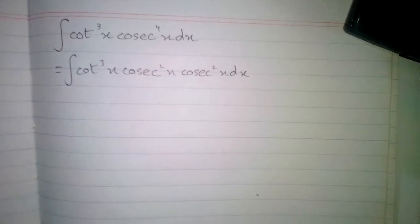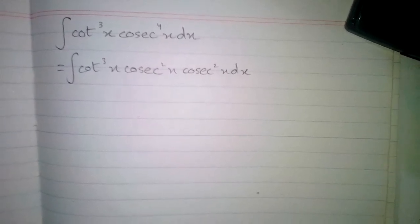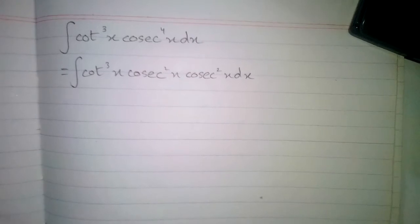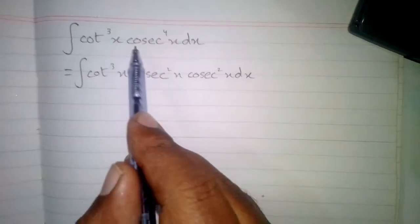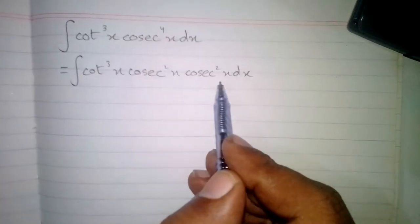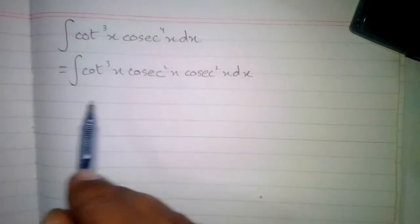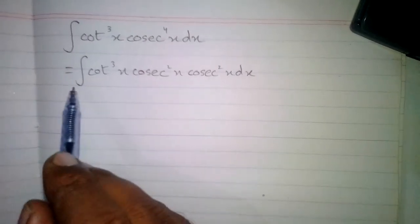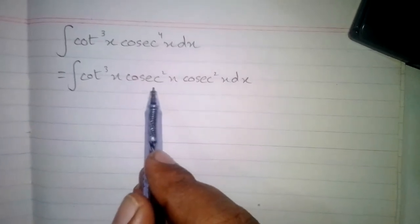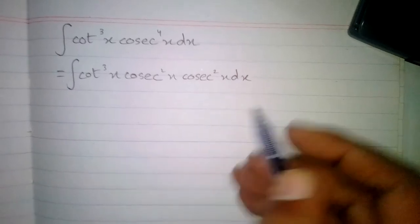In this video we will find the integral of cot cube x cos 4x dx. We can write this cos 4x as cos square x cos square x. So we have integral of cot cube x cos square x cos square x dx.